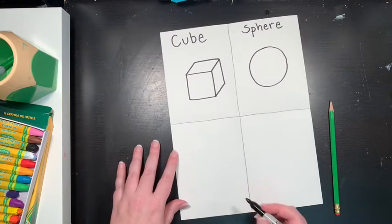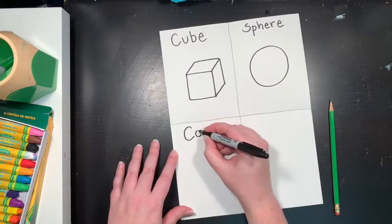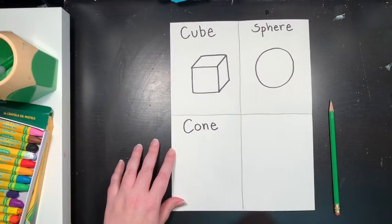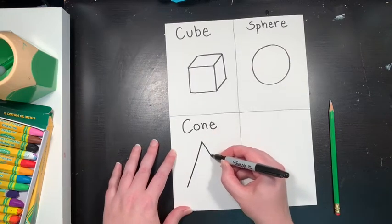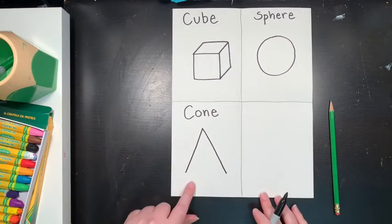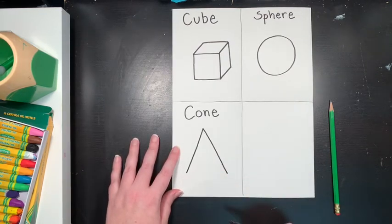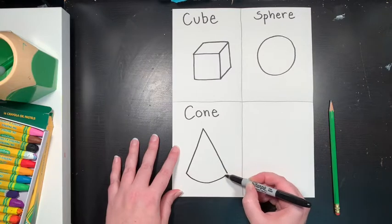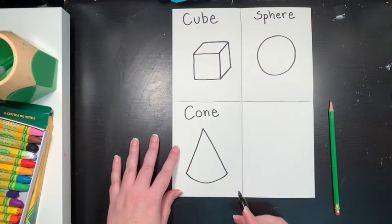Okay, now let's do a cone. C-O-N-E. So a cone starts with two sides of a triangle. Just like that. Then you're going to connect your two sides using a smiley face line like that. Okay, so that's a cone.